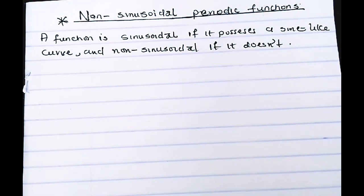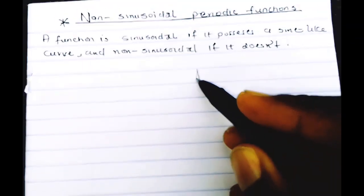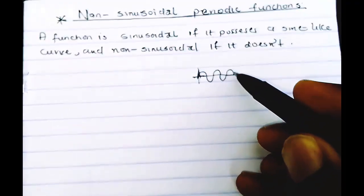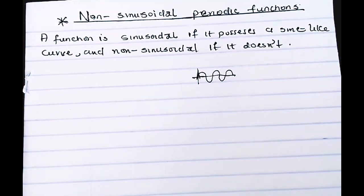A function is sinusoidal if it possesses a sine-like shape. In our last video we treated sine-like curves — something like this. These are sine-like curves. The cosine function possesses this kind of curve, and the sine function also possesses this kind of curve, so we call them sinusoidal curves.